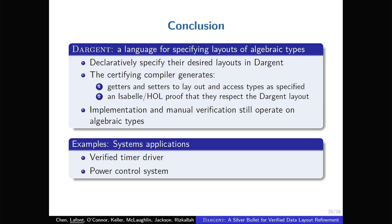And to conclude, so Dargent is a language that allows you to specify layouts for algebraic types. So you would just declare some layouts that you need. And then the compiler is going to generate the operations that you need to manipulate this data in memory according to the layout. And it will provide a proof that it respects those layouts. And when you are on the implementing side in Cogent or on the verification side, you still operate on the algebraic side. So you still have this abstract viewpoint. And the examples that we have in mind are about systems programming. So you can check our paper. We have a verified timer driver and a power control system. Thanks for your attention.